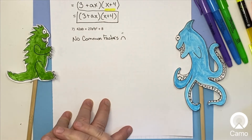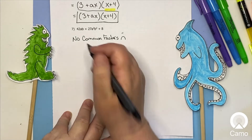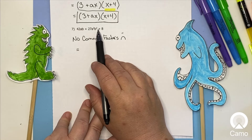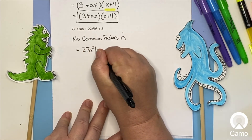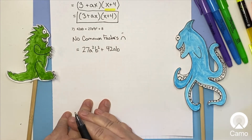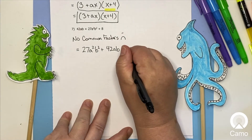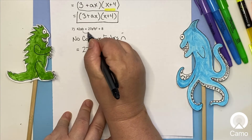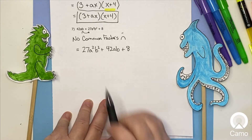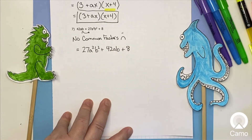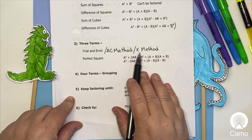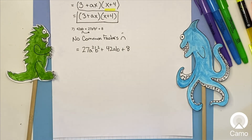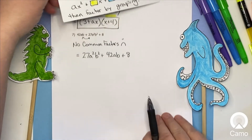The next thing I notice is that the squared term, a²b², is tucked in the middle and should be in front. I'll rewrite it first, moving that term to the front using the commutative property of addition. Now I can see I have a three-term polynomial — a trinomial. For three terms I can use trial and error, the AC method, or the X method. I'll go ahead and try the AC method since we did trial and error in the previous video.